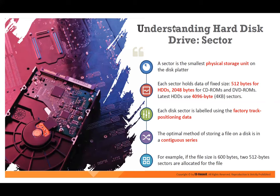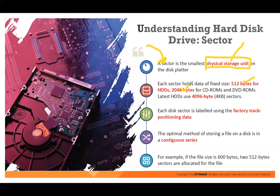A sector is the smallest physical storage unit — that is where the data is stored. Even though you have tracks and cylinders, at the end the sector is what matters. Sector size depends on how much data you want to store. It can start with something like 512 bytes for a hard disk, or for CD-ROM and DVD it's 2K. Latest HDDs use 4K byte sectors — that means they can store 4K as one sector, which is big. The more data you can store per sector, the better.